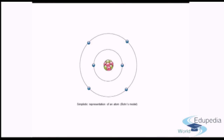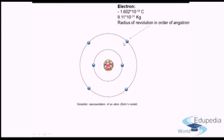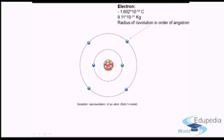Let us see the very basic structure of a simple atom. This is the simplistic representation known as Bohr's model. We can see particles with negative charge, particles with positive charge, and green particles that are chargeless. The negatively charged particles that move in orbits around a center are known as electrons. The charge of an electron is minus 1.602 × 10⁻¹⁹ coulombs.